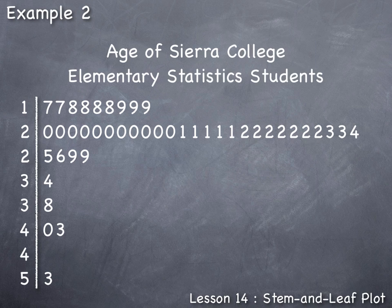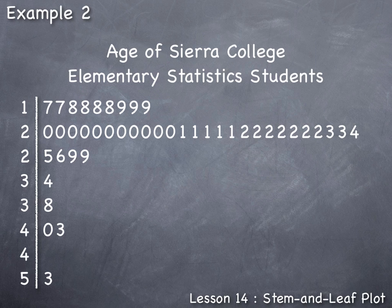Here is our completed stem and leaf plot titled 'Age of Sierra College Elementary Statistics Students.' It is noticeable that the majority of students are in their early 20s (20–24 years old). Students younger than that were in their late teens, which doesn't extend very far below. However, students above their mid-20s extend through the upper 20s, 30s, 40s, and into the early 50s — much further in the positive direction. This asymmetric distribution is referred to as a positively skewed distribution.